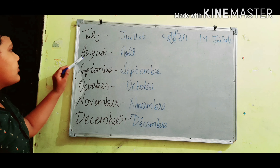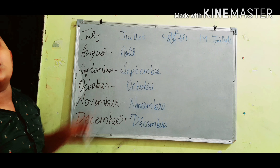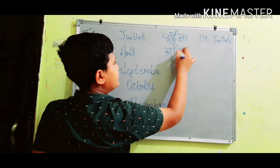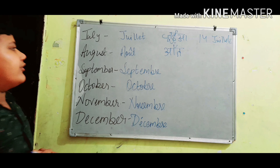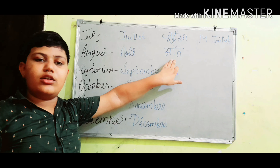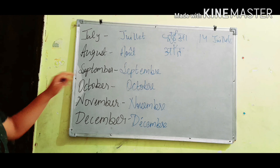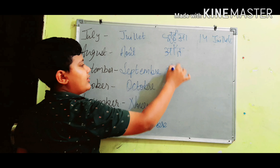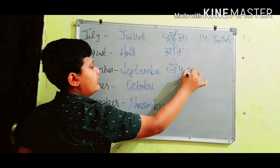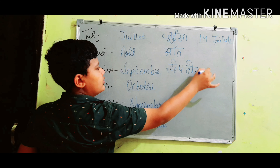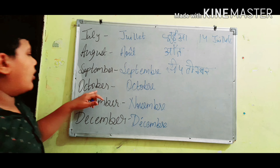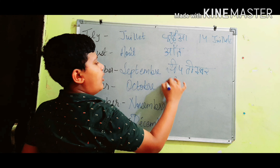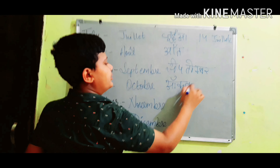August is août — août. If I am writing the Hindi spelling wrong, please ignore it. September is septembre — septembre. October is octobre — octobre.